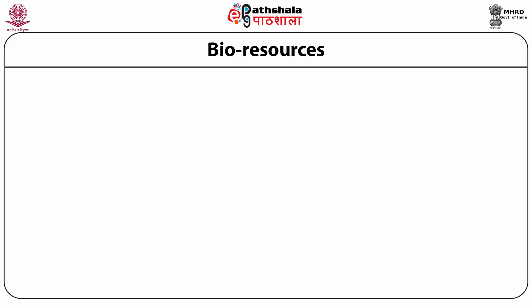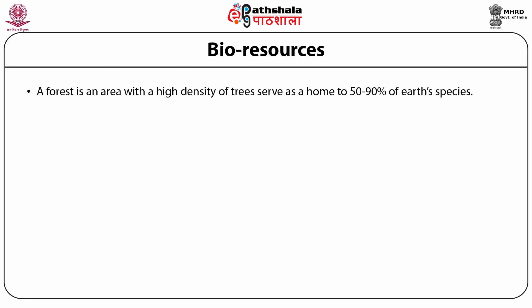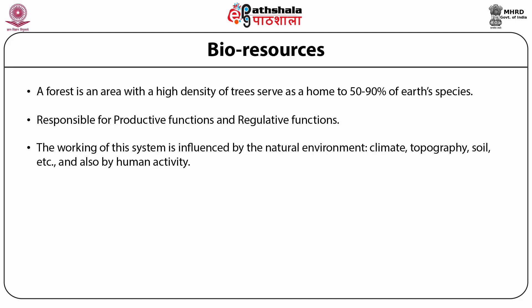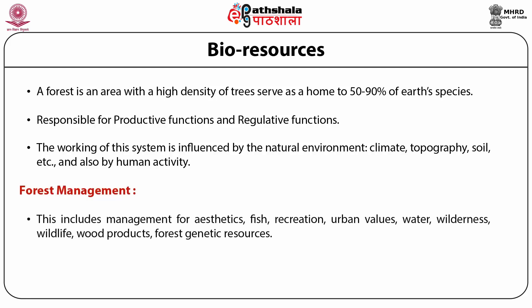The main part of natural resources involves the biotic factor — mainly from forests — which includes both fauna and flora. A forest is an area where high density of trees serve around 50 to 90% of earth's species, and is responsible for protective and regulative functions. The working of this system is influenced by natural environment — climate, topography, soil — and also by human activity. Important aspects of forest resource management include: aesthetics, fish, recreation, urban values, water, wilderness, wildlife, wood products, and forest genetic resources.